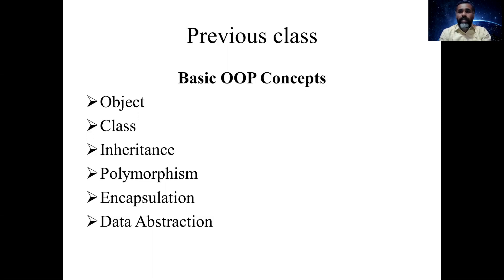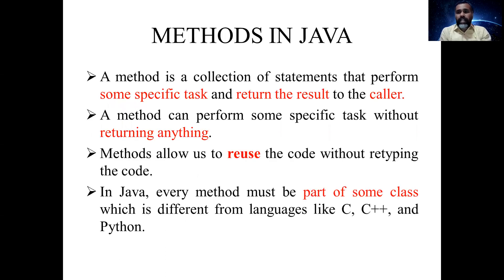Encapsulation is hiding and wrapping data into a single unit called a class by making data members private. Private members cannot be accessed outside the class; only through setter and getter methods can we access them. Data abstraction is providing only the essential data to the user, not all the data — a form of hiding data. These are the topics from the last class. Today we are going to see methods and constructors in Java.